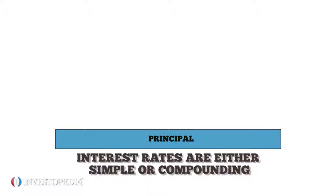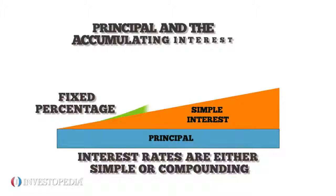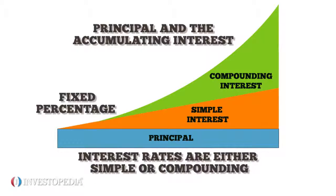Interest rates are either simple or compounding. With simple interest, the rate paid is a fixed percentage of the loan. With compounding interest, both the principal and the accumulating interest are subject to interest fees.